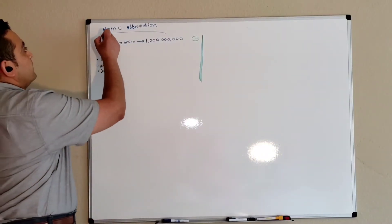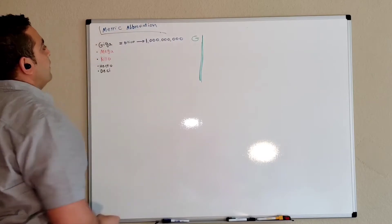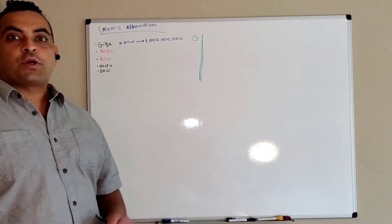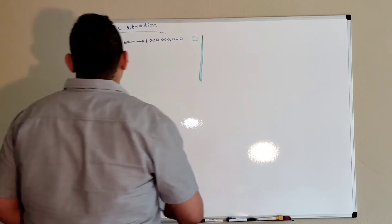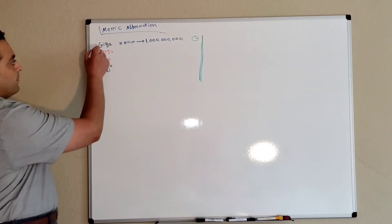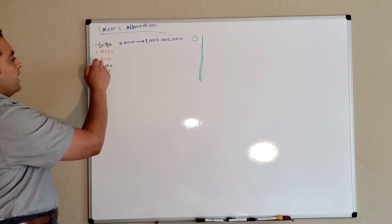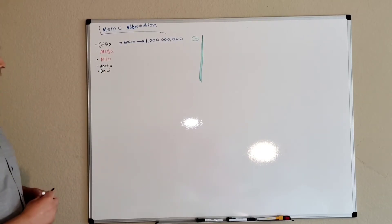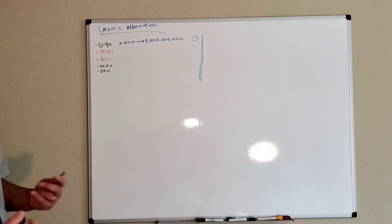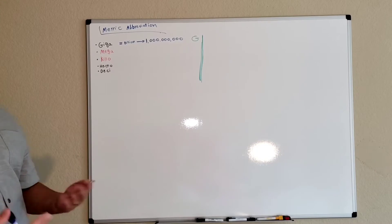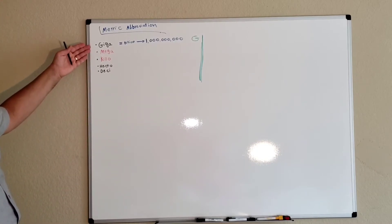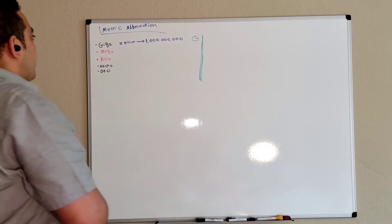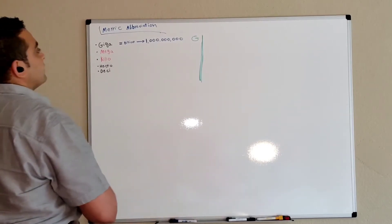In this lecture we will understand metric abbreviations and unit conversion. We have metric abbreviations: giga, mega, kilo, hecto, and deca. The mega and kilo are highlighted in red because we use them in ultrasound more than the others, so we need to focus on and memorize them very well.